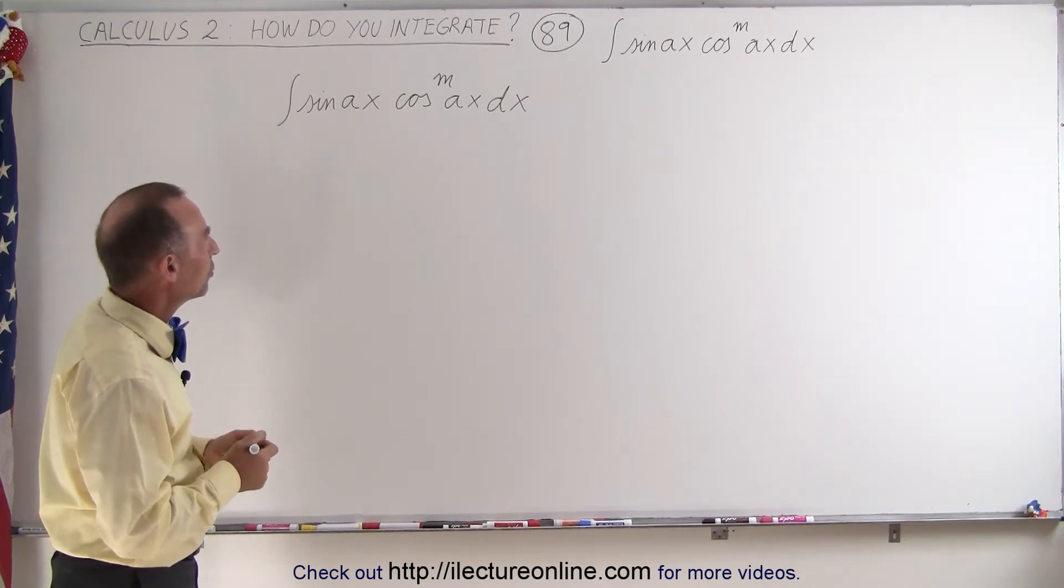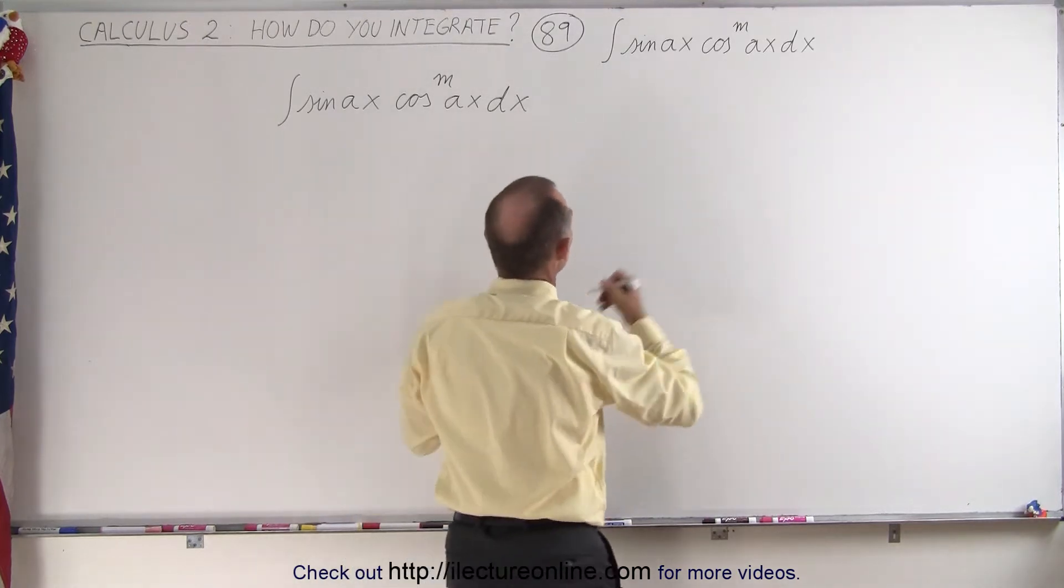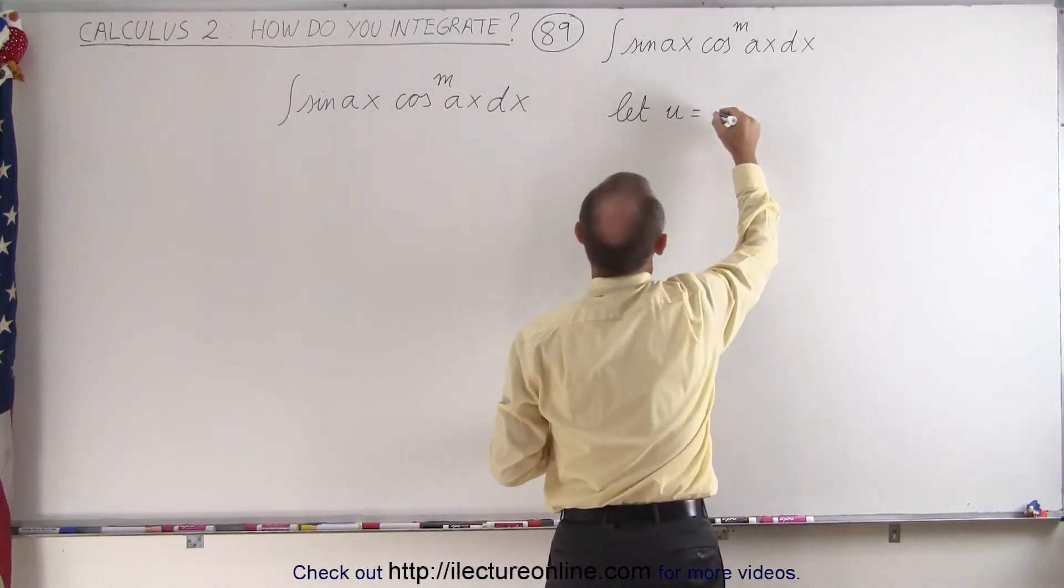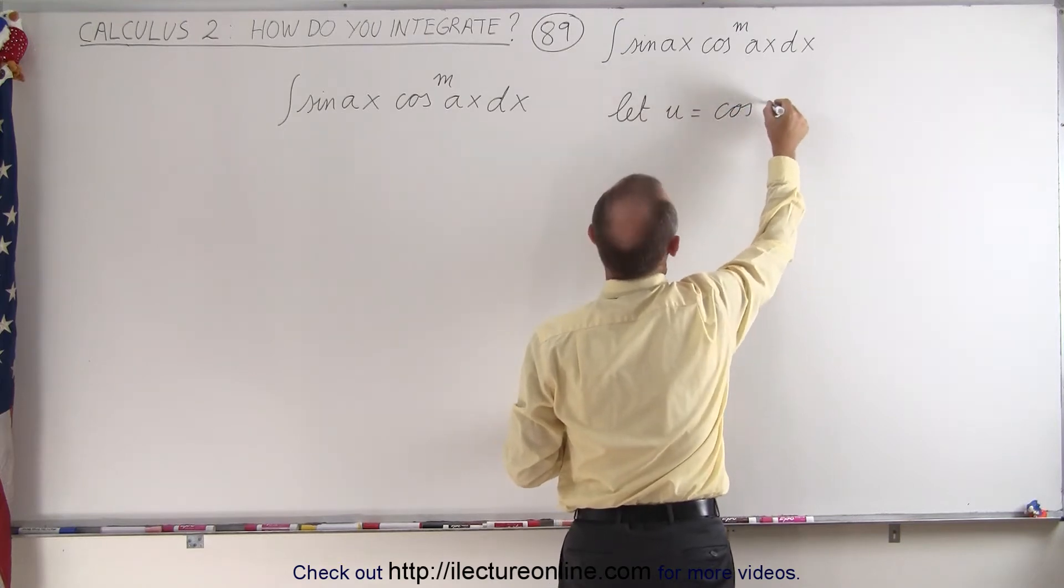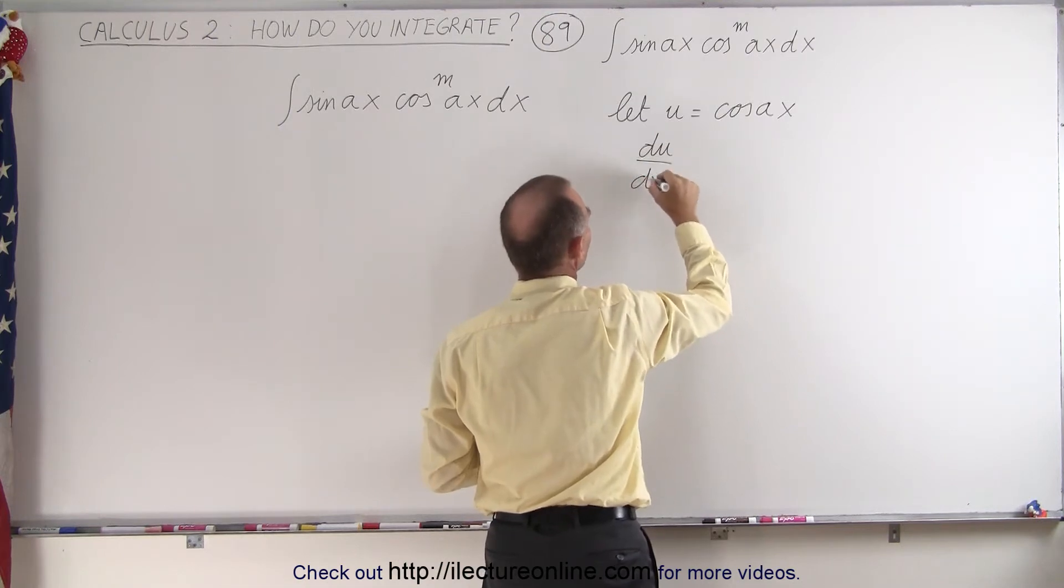So what we need to do here is we're going to let u represent the cosine of Ax. Let's do that. Let u equals the cosine of Ax, and so du/dx, the derivative of that with respect to x...